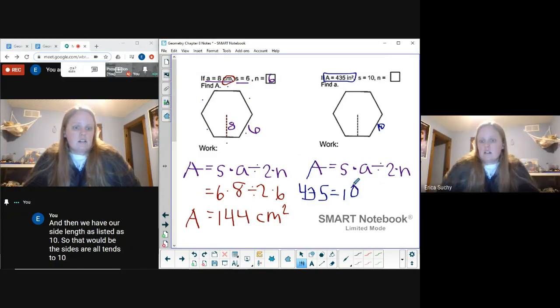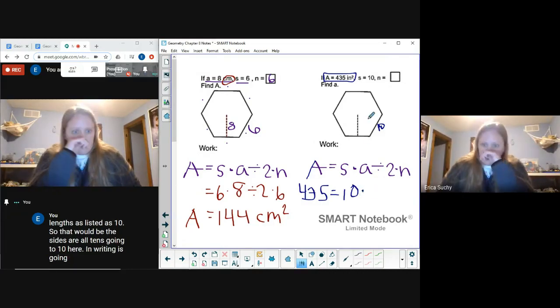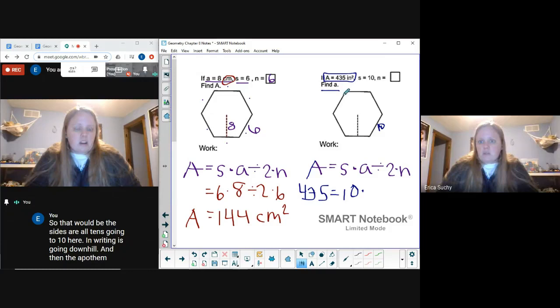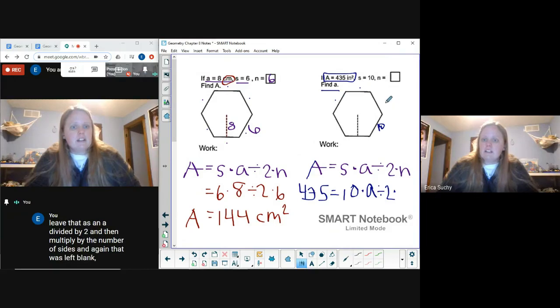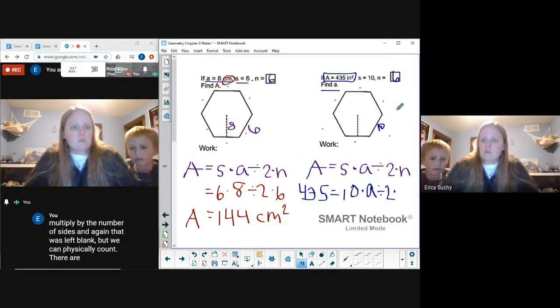And then the apothem is actually what we're trying to find, so I would leave that as an a, divide by 2, and then multiply by the number of sides. And again, that was left blank, but we can physically count that there are six sides. This would be a hexagon.